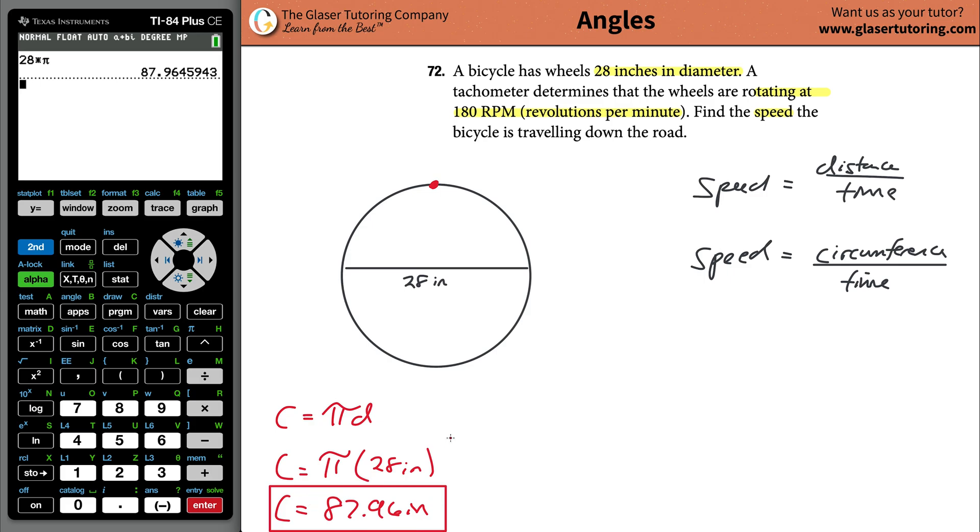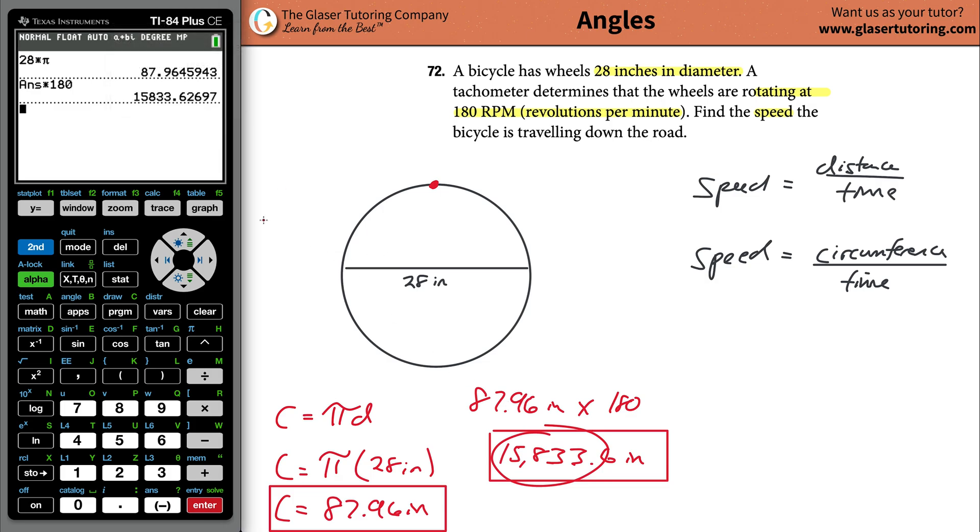But how many revolutions are you making in a particular minute? You're making 180 of them. So if every single revolution is about 88 inches, then what I can do is take that number and multiply it by 180. That would now tell me the entire amount of inches - 15,833.6 inches. What I did in the calculator: took the answer I had before, the exact value, and multiplied it by 180. This would tell me the exact number of inches I'm traveling every single minute. This is the amount of inches traveled in a minute.